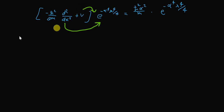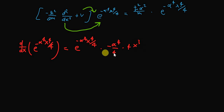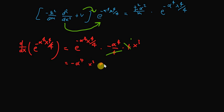For the first differentiation: d/dx of e^(-α⁴x⁴/4) equals the exponential function e^(-α⁴x⁴/4) multiplied by the derivative of the exponent, giving (-α⁴/4)·4x³. The 4s cancel, leaving -α⁴x³ · e^(-α⁴x⁴/4).